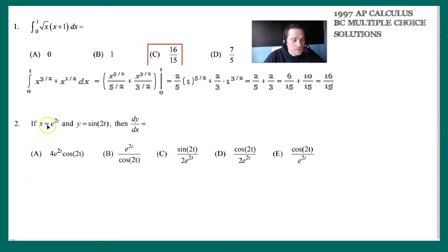Look at the next one. If x is defined as e to the 2t and y is sine of 2t, then dy dx equals something. Now remember, these are parametric equations. So in this case, dy dx is defined as dy dt divided by dx dt.